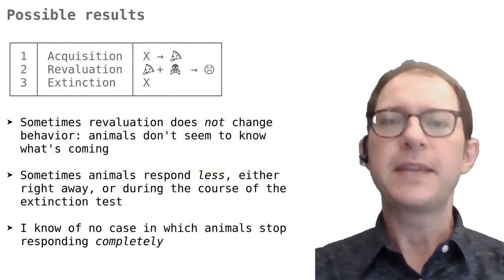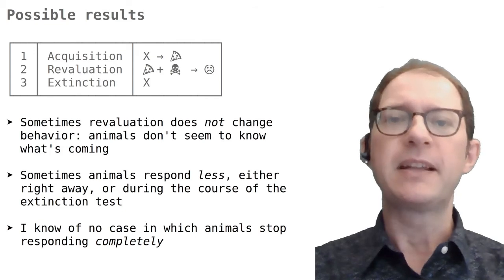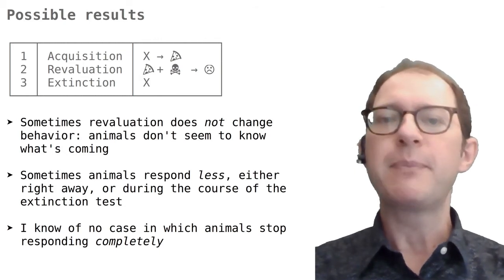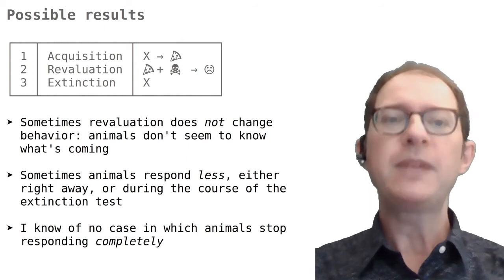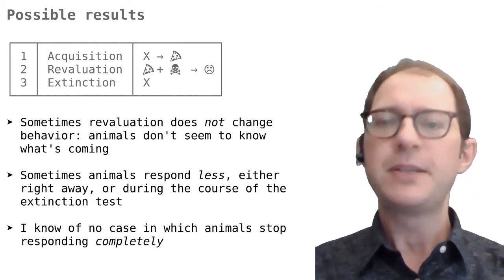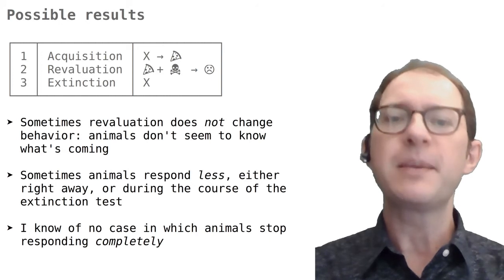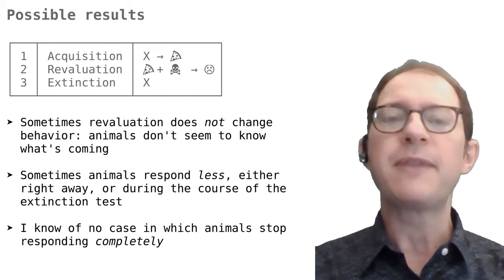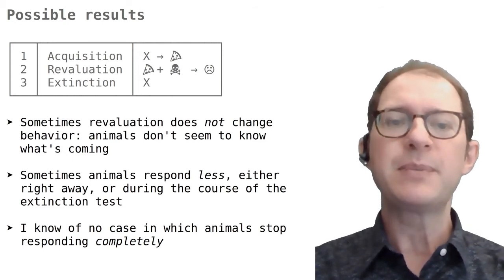In the third phase, the Pavlovian stimulus is presented again or the instrumental action is allowed again — for example, Pavlov would sound the bell and Skinner would put the rat back in the Skinner box with the lever. Sometimes the animal responds exactly how it did before the revaluation phase. This result supports the stimulus-response view, according to which the animal is not thinking about what's coming next. The dog would salivate and the rat would press the lever, but then not eat the food, because now they find it yucky.